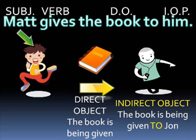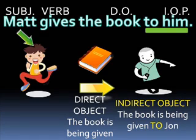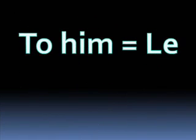You'll notice that in English we use two words to identify the indirect object — in the example, those two words were 'to him.' In Spanish, both words are wrapped up into one little indirect object pronoun: le, l-e, le.